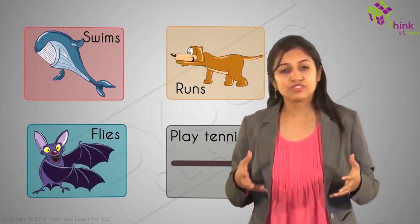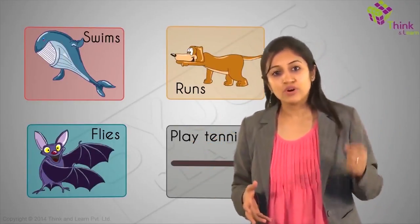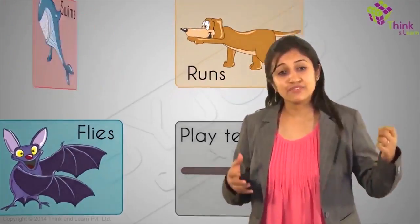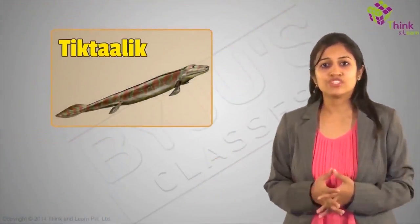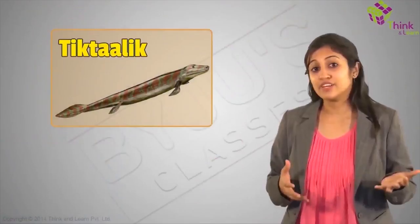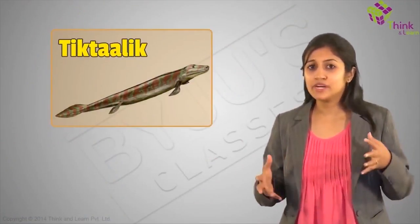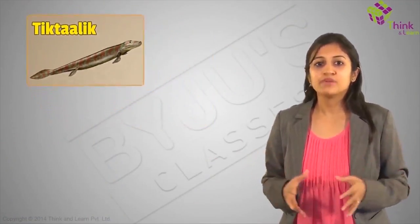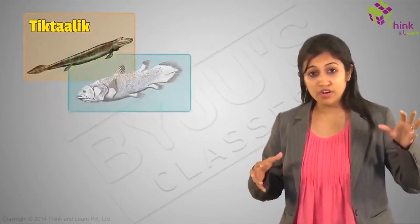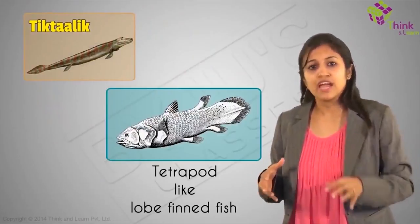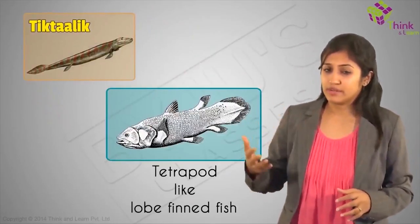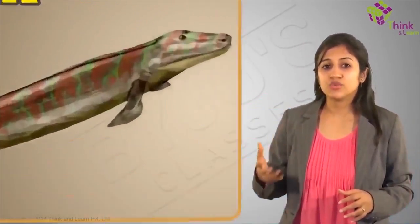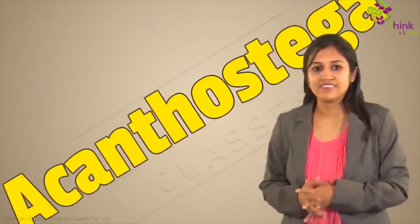Our limbs have the same structure because we descended from the same animal — like a tiktaalik, which, other than having a really cool name, seems to have been perched midway between a lobe-finned fish and the later true tetrapods, the earliest ones being the Acanthostega.